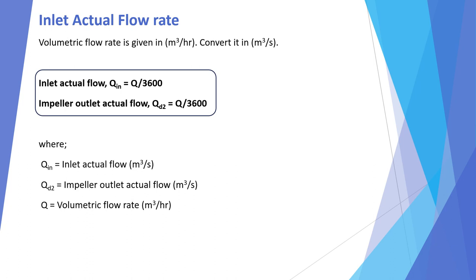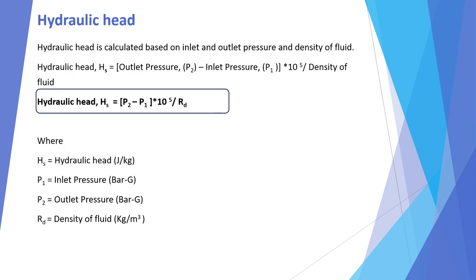Further calculations start. The inlet actual flow rate Qin and the outlet impeller flow rate Qd2, both in m³/s, are found by dividing Q by 3600 — these two values will be the same. The hydraulic head Hs is calculated based on inlet and outlet pressures and fluid density: Hs = (P2 − P1) × 10⁵ / ρ, where Hs is in J/kg, P1 and P2 are pressures in bar gauge, and ρ is density in kg/m³.